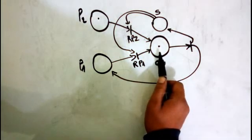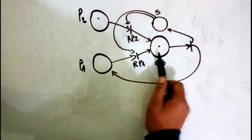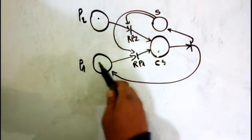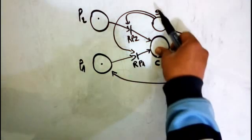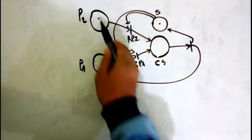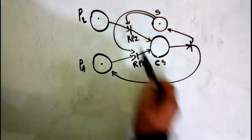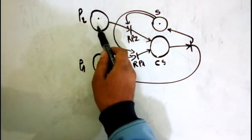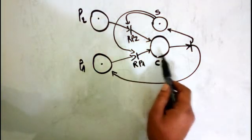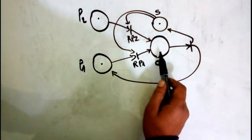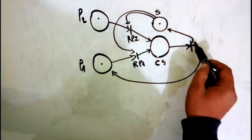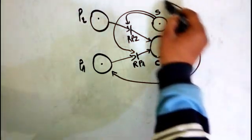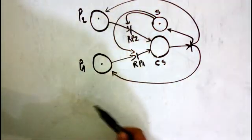Let's see what happens. We want to run this - it's fireable because it needs one token here and one in the semaphore. When we fire, we remove both tokens and put a token in the critical section. When it finishes, the liberation transition is fireable - we fire it, return the token to the semaphore, and put tokens back. Now P2 can also enter the critical section and we do the same thing to liberate.